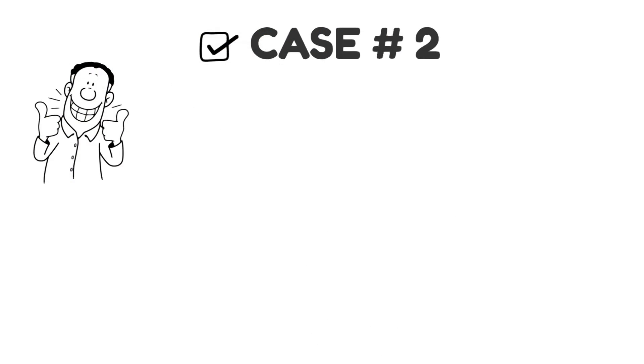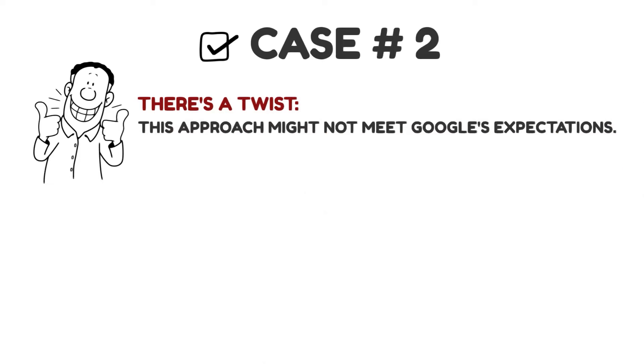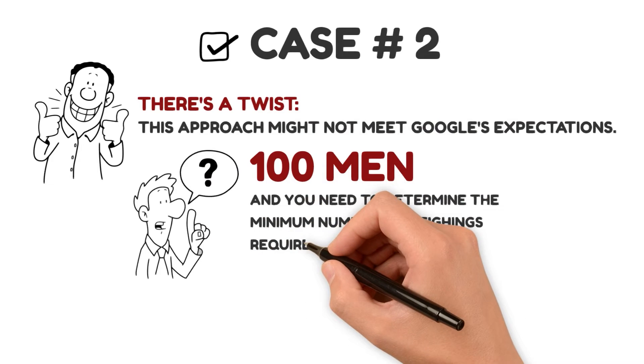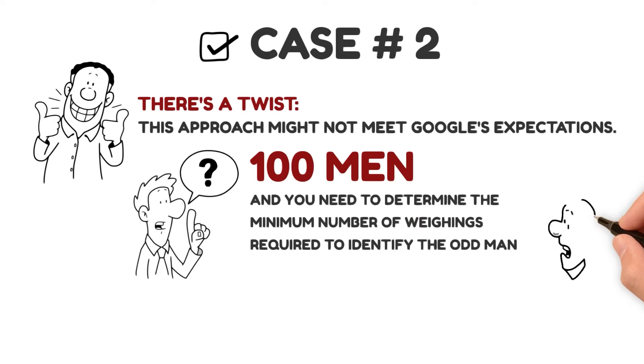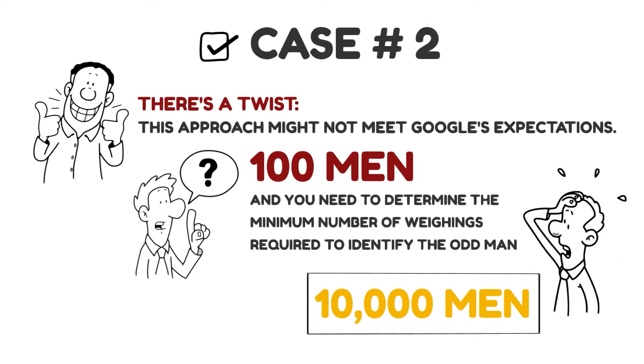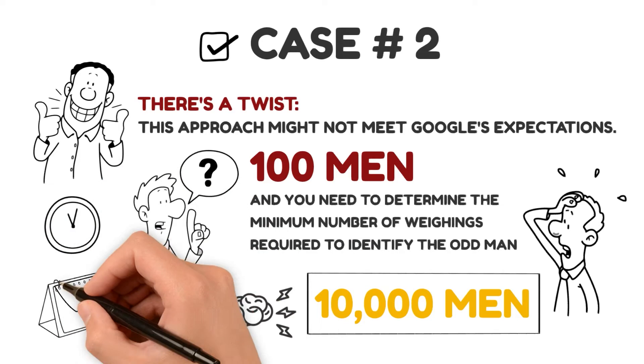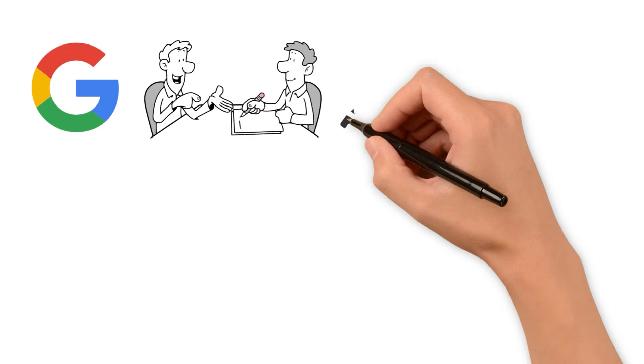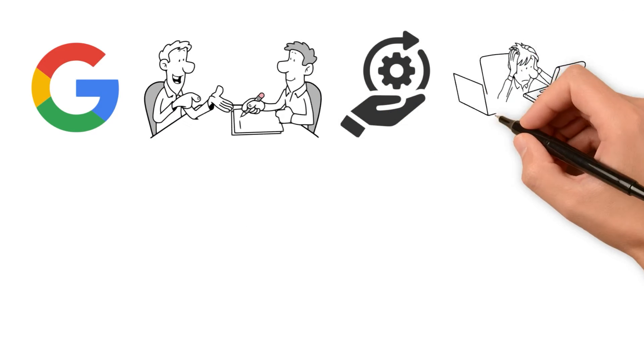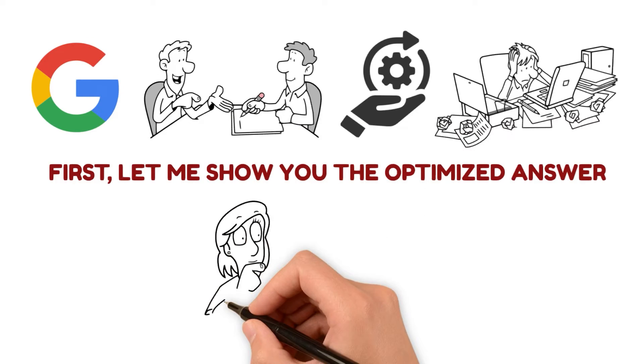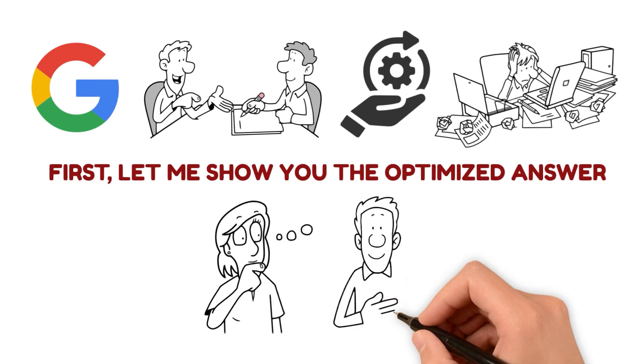While your efforts are commendable, there's a twist. This approach might not meet Google's expectations. What if Google challenges you with a puzzle involving 100 men and you need to determine the minimum number of weighings required to identify the odd man? It's complex because there are numerous possible combinations to consider. To up the ante, could you solve it for 10,000 men? The logical approach I discussed still holds for a large number of objects, but it would take hours, if not days, to work through all the combinations. Think about it from Google's point of view. They're seeking a dynamic approach, meaning your solution needs to be highly efficient and capable of quickly handling any number of objects during runtime.